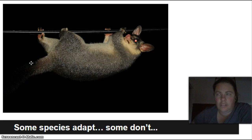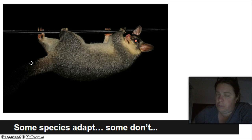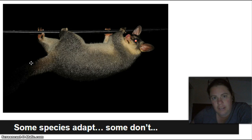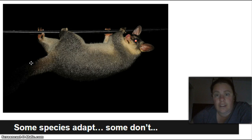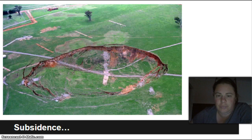Some species can adapt — possums, for example, are seen in school yards and have learned to eat human food, though that's not ideal since they then struggle to revert when humans leave. Kangaroos also adapt remarkably: if food looks scarce for months ahead, they'll hold off gestation and produce no joeys. But beyond a few adaptable species, most animals simply cannot cope, which is a significant problem.